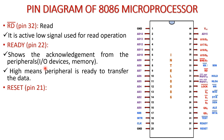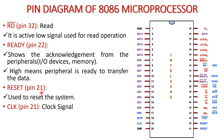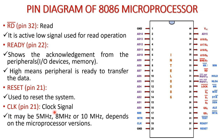The next pin is RESET, which is an input pin available at pin number 21. It is an active high signal used to reset the system. For proper function, it should remain high for at least 4 clock cycles. The CLK pin is the clock signal required for operation of the 8086 microprocessor, and it may be 5MHz, 8MHz, or 10MHz — all these ranges are supported.